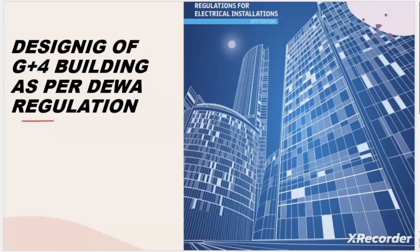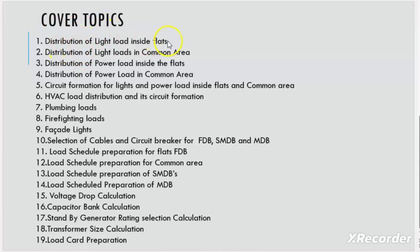In this video, we will take an architectural layout from the civil. In this video and in the upcoming videos, I will discuss the topic: distribution of light load inside the flats, distribution of light loads in common areas like corridor, passage, parking, and lobbies. The third point we will discuss is distribution of power load inside the flat and in the common area. After that we will discuss the circuit formation for the light and power load inside the flats and in common area. Then we will discuss the HVAC load distribution and its circuit formation, and also consider the plumbing loads, fire fighting loads, and facade lights.